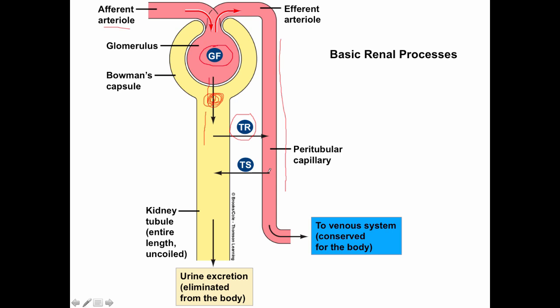Within the tubule, between the tubule and the peritubular capillaries, there's an opportunity for exchange. When substances move from the tubule back to the blood, we call that tubular reabsorption — we filtered something and we want to take it back. There's also an opportunity for substances to move from the peritubular capillaries to the tubule, which is called tubular secretion — something that didn't get filtered that we want to add to the urine.